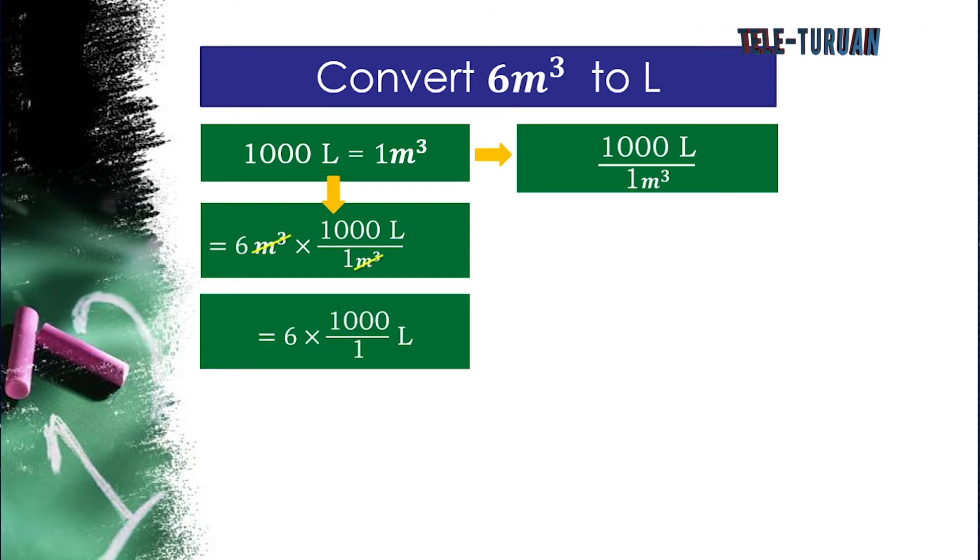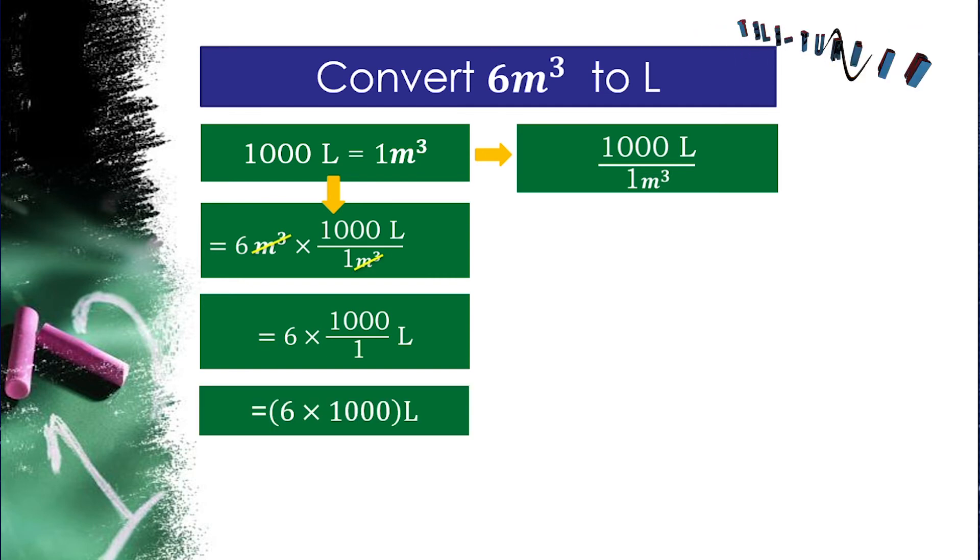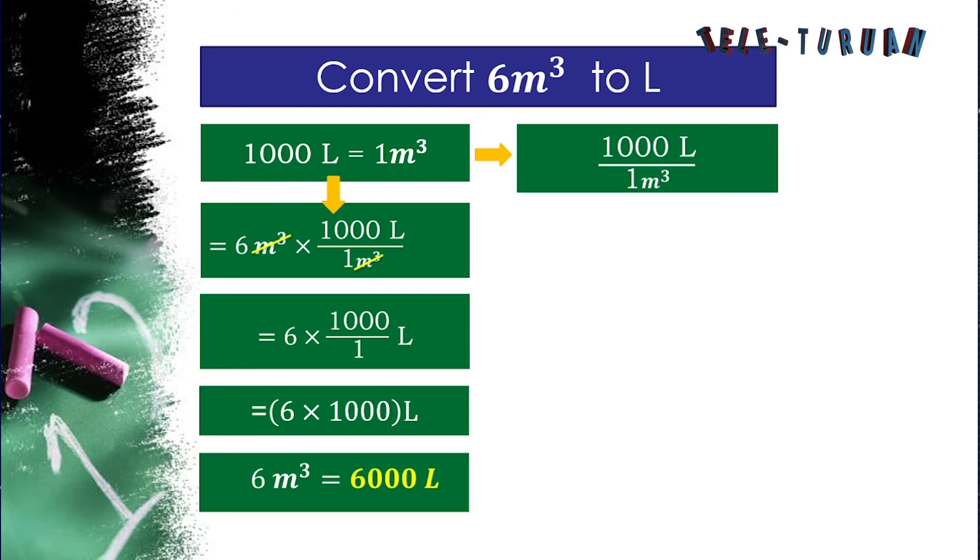1,000 divided by 1 is equal to 1,000. Now we have 6 times 1,000 liters is equal to 6,000 liters. So 6 cubic meter is equal to 6,000 liters.